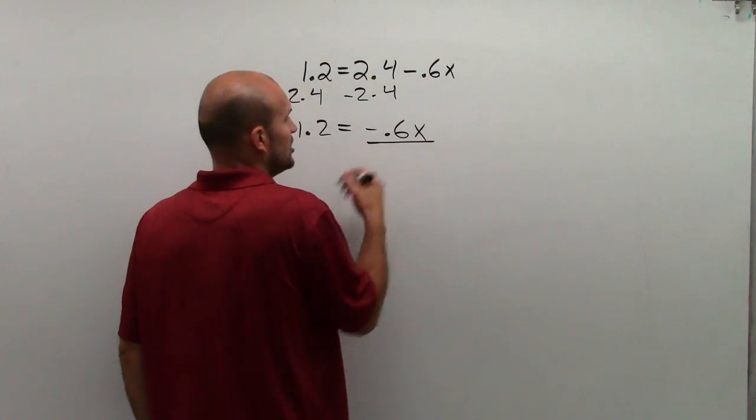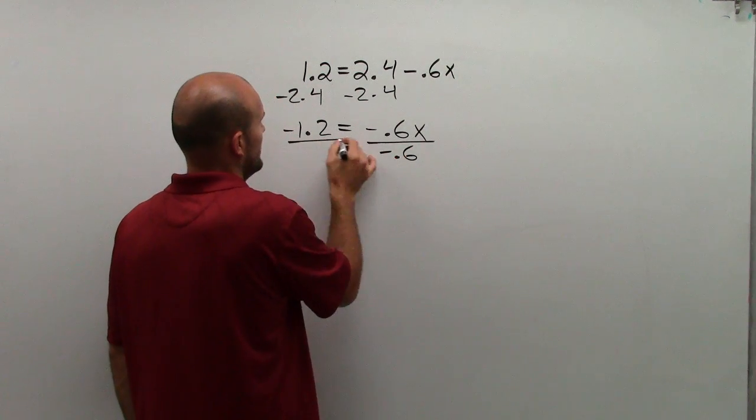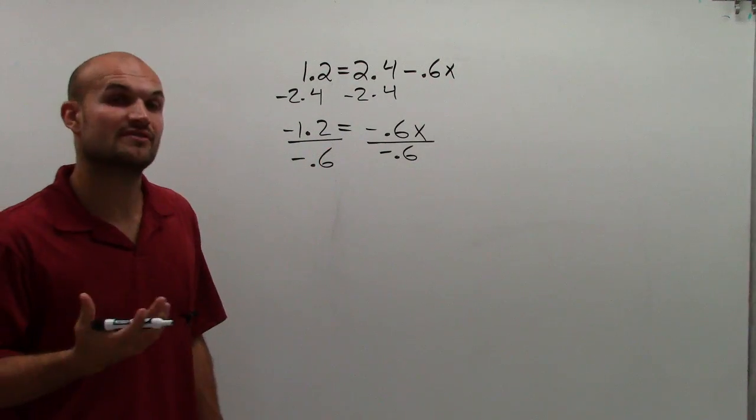So to undo multiplying by negative 0.6, I need to divide by negative 0.6. And I'm going to do that on both sides of the equal sign, using the division property of equality.